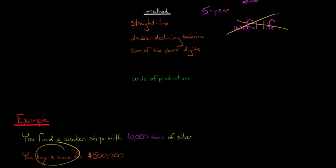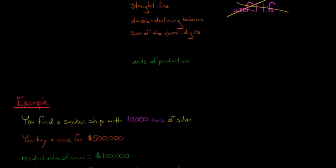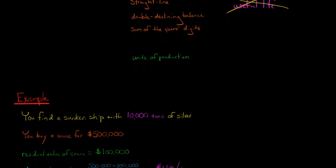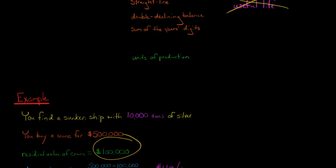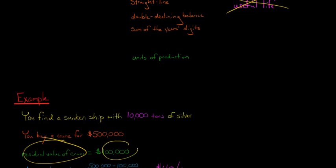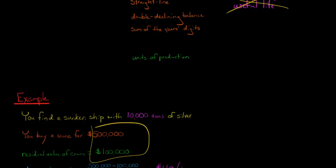We buy a crane for $500,000. That crane has a residual value of $100,000 — basically when we're done with it, we think we could sell it to somebody else for $100,000, or maybe it has scrap value. So the residual value is $100,000 and the crane cost is $500,000, making the difference $400,000 — that's the amount we're going to have to depreciate over time.